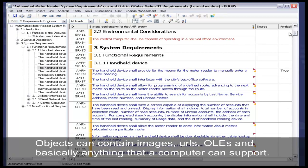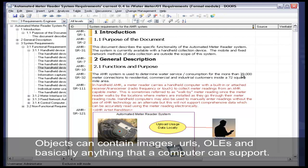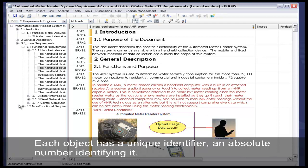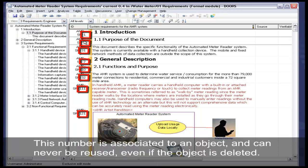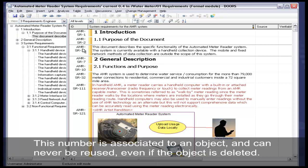Objects can contain images, URLs, OLEs, and basically anything that a computer can support. Each object has a unique identifier, an absolute number identifying it. This number is associated to an object and can never be reused, even if the object is deleted.